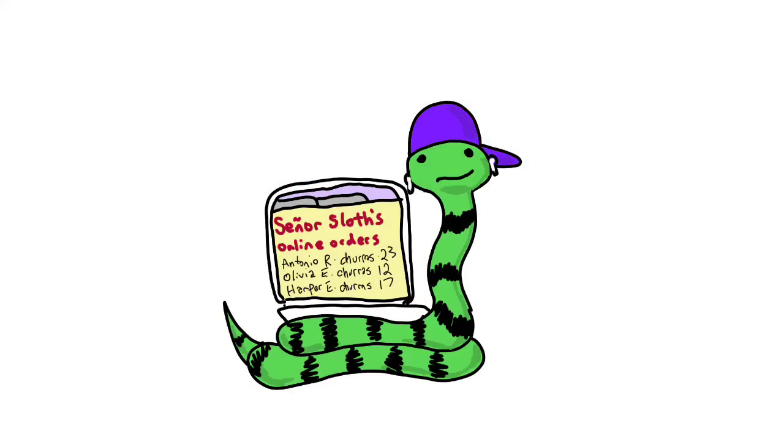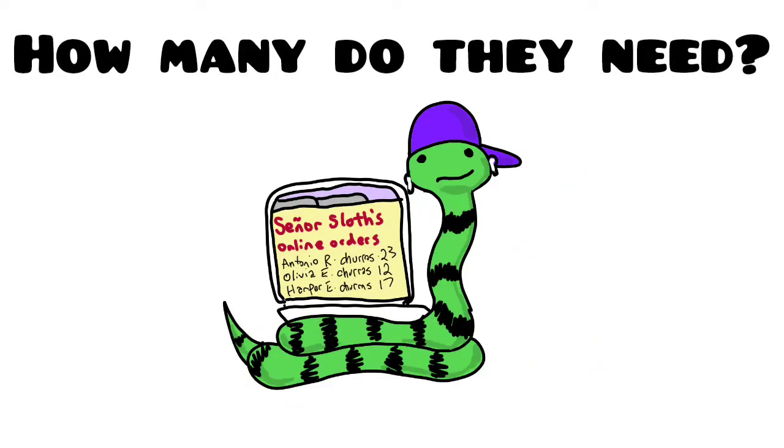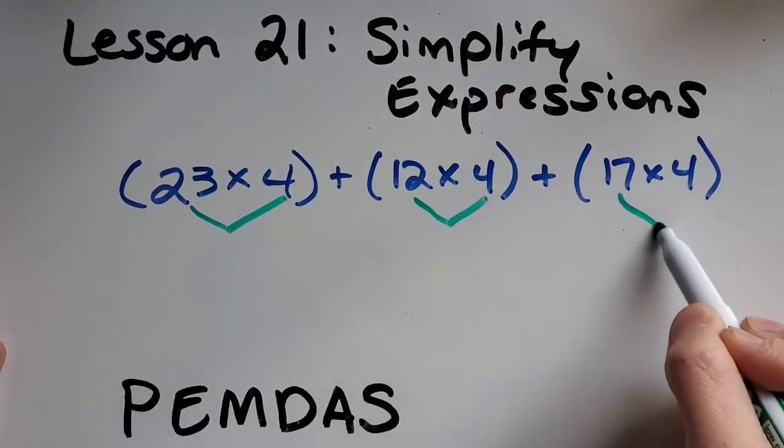Henry man I was looking at the online orders and look at this. Each churro order comes with four and Antonio R ordered 23 orders of churros, Olivia E ordered 12 orders of churros and Harper E ordered 17. Maybe our friends here can help us figure out how many churros do we need to make. I think we can help him out, let's pause the video and see if you can figure out if churros come in orders of four how many churros are they going to need for 23 orders, 12 and 17. Check your work with mine.